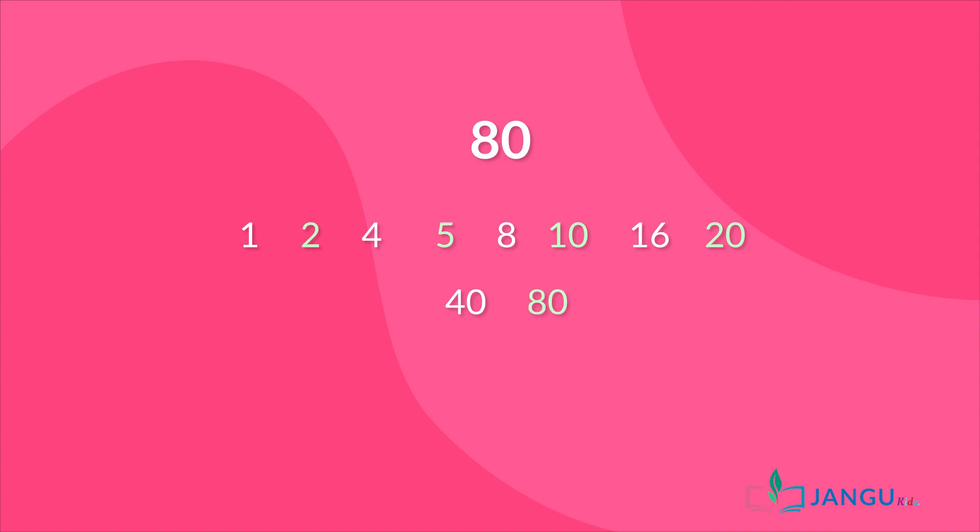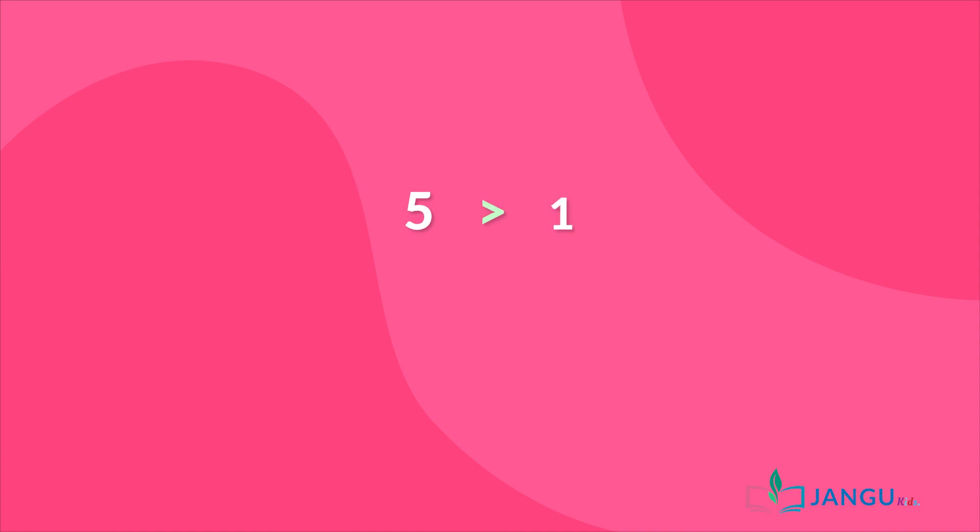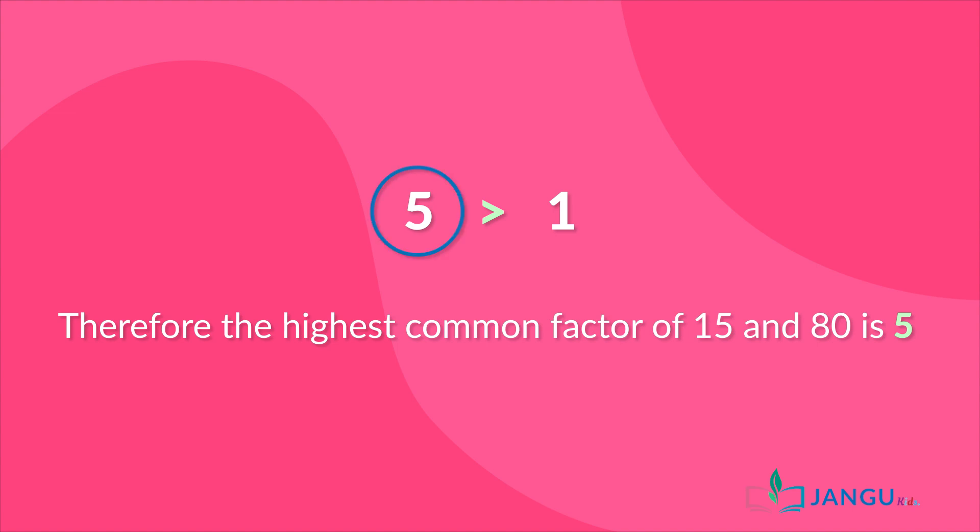From this, we can see that the only common factors of these two numbers are 1 and 5. Five is greater than one, therefore the highest common factor of fifteen and eighty is 5. Let's try another example.